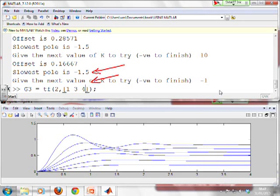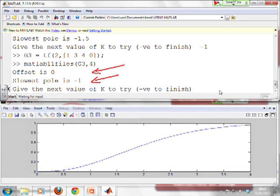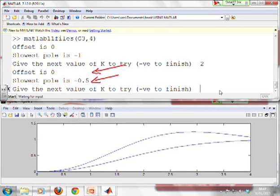I'm going to put -1 to finish. Next I could see how this changes if I put an integrator into the process. I'll run my file again and the offset is 0 and the slowest pole is -1. Let's try a gain of 2.